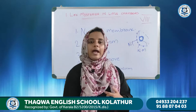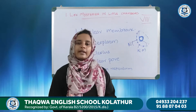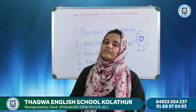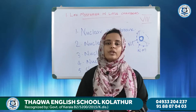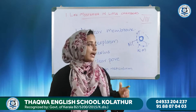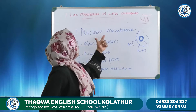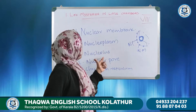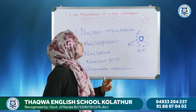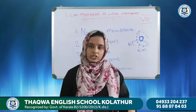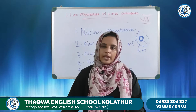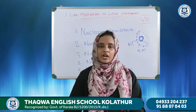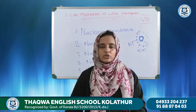And lastly, chromatin reticulum is seen as a network in the nucleoplasm, and they carry genes. So those are the five different parts of the nucleus: nuclear membrane, nucleoplasm, nucleolus, nuclear pore, and chromatin reticulum. You now understand the function of each of them.